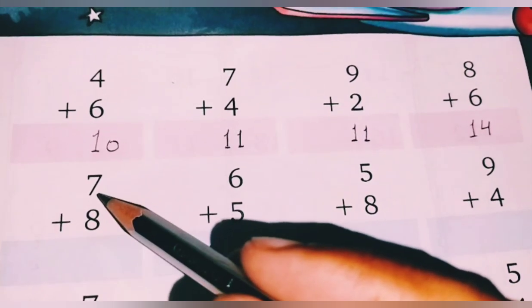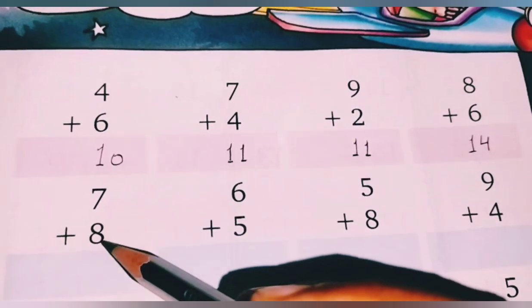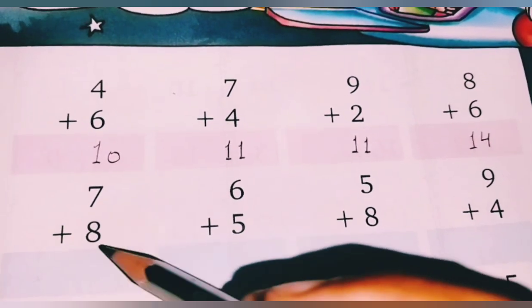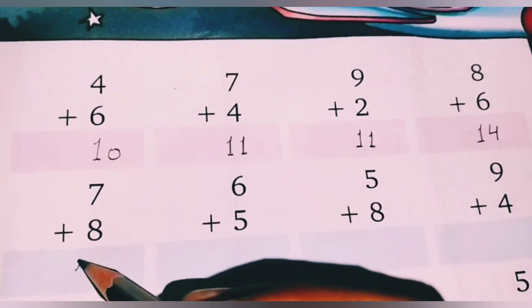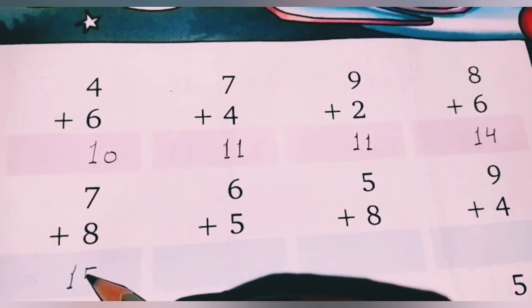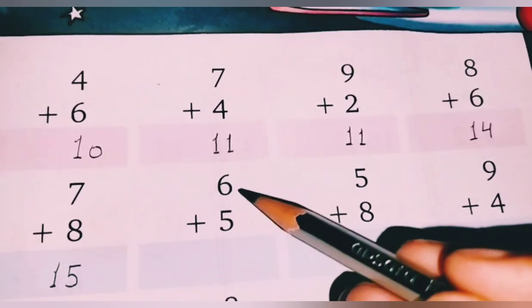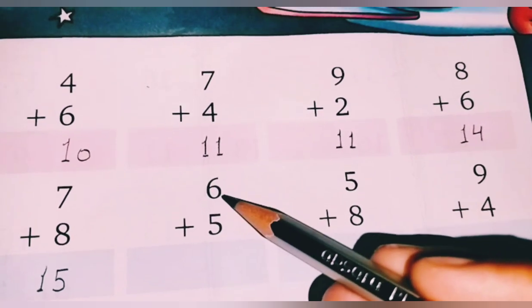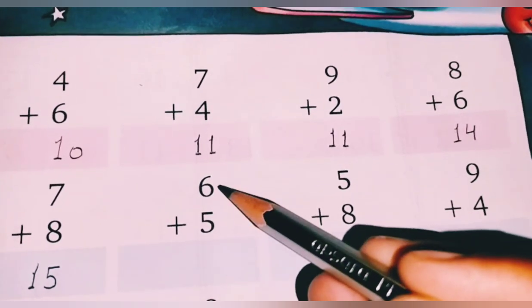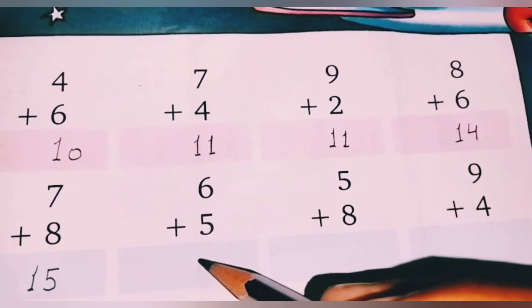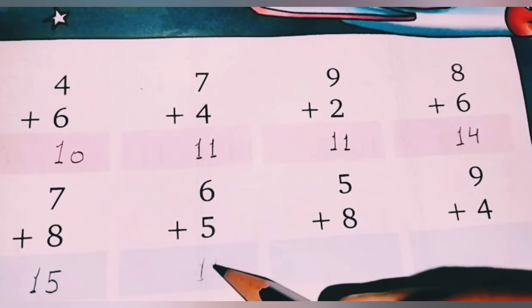Students, 7 plus 8. 7 plus 8, students, 15. 15, okay. Students, open number there was 6, which number is 5. 6 plus 5, what is it? 11. 11, okay.